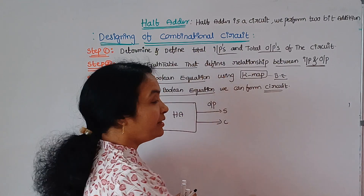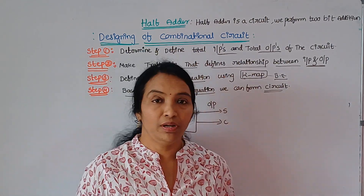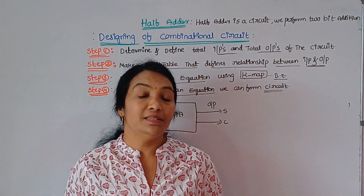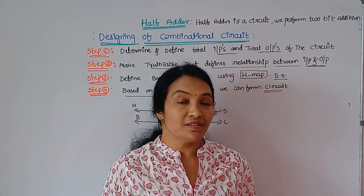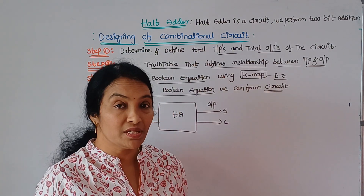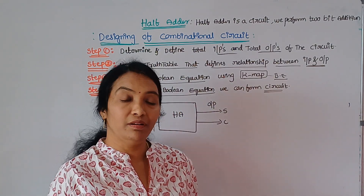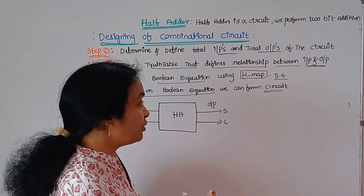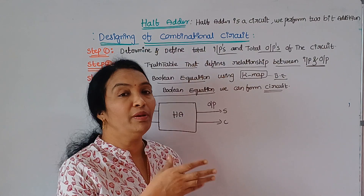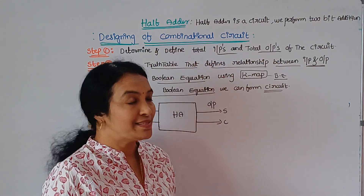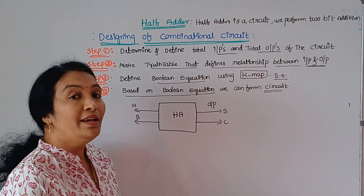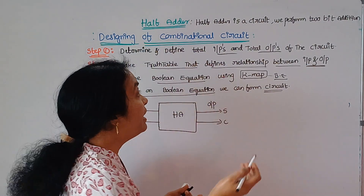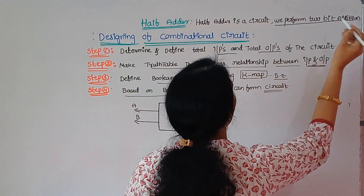Now, let's move on to the half adder. I have already said that general combinational circuits include the half adder and full adder, while sequential circuits use flip-flops. The half adder is a combinational circuit where we perform two-bit addition.